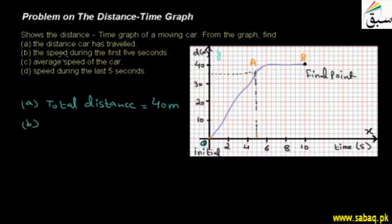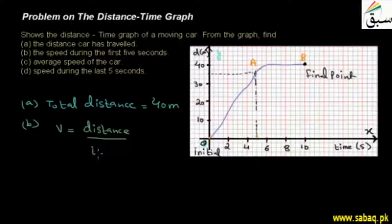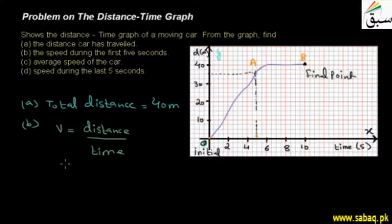Now the second part: we find the speed during the first 5 seconds. Speed equals distance divided by time. Because it has asked for the first 5 seconds, we will find out the distance for those 5 seconds.